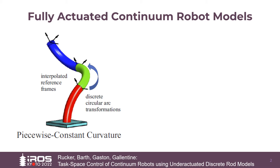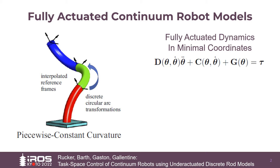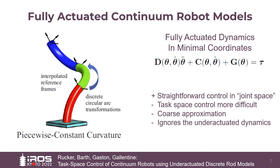Models of continuum robot configuration are often written in terms of a set of minimal coordinates, such as segment curvatures, usually with constant curvature over each actuated segment. The dynamics are then formulated using Lagrangian mechanics and represented in a fully actuated form analogous to rigid link robot dynamics. The main benefit of this approach is that conventional control techniques can be directly adapted for control in joint space. However, task space control is more complicated, and in the end this approach usually results in a coarse approximation of robot shape that ignores the underactuated variable curvature dynamics of the flexible structure.